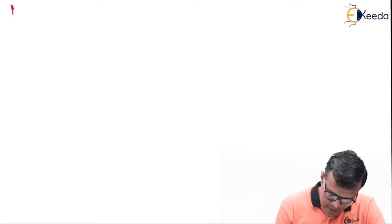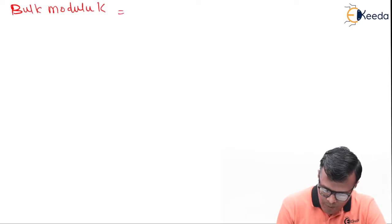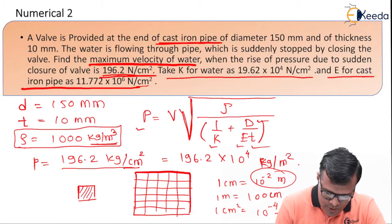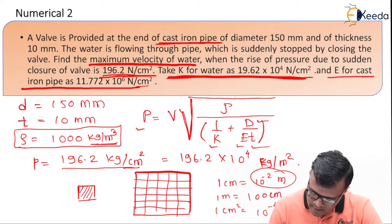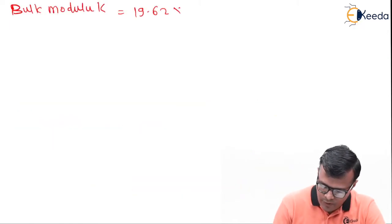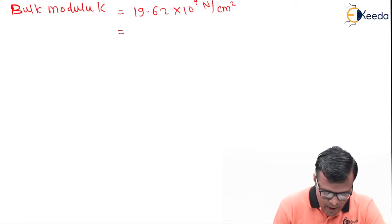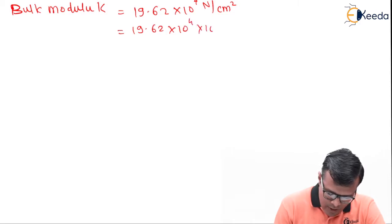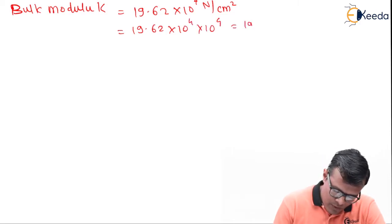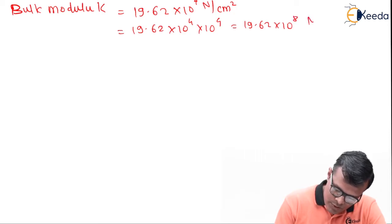I think this is clear to all of you. So let's start with another conversion. Bulk modulus K is equal to 19.62, K given to us as 19.62 × 10^4 Newton per centimeter square. So the value will become 19.62 × 10^4 × 10^4, that is 19.62 × 10^8 Newton per meter square.